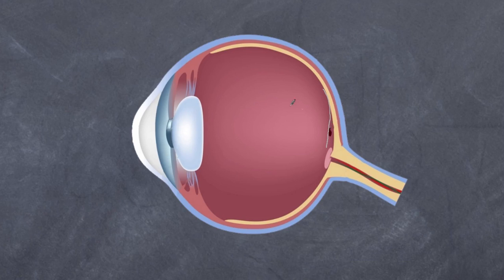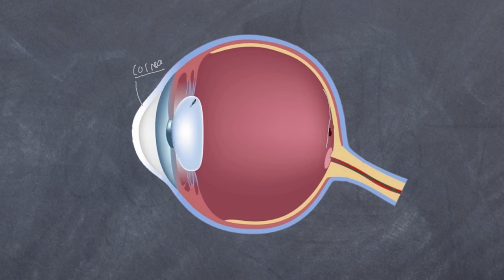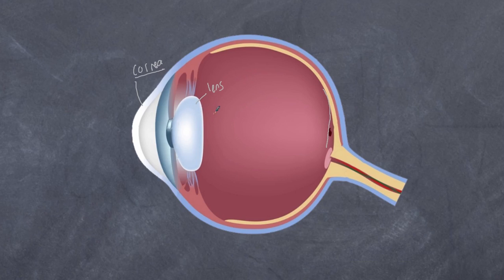Light enters the eye and bends to form a real image at the back. It passes through two particular mediums that determine how much it bends. The first is the cornea, which does most of the bending. Light then passes through the opening called the pupil, through the lens, which can adjust its curvature. There are ligaments and muscles that determine how much the lens distorts. The space behind the lens is filled with a jelly-like substance called vitreous humor — once light bends here, it travels straight through this medium.